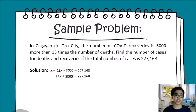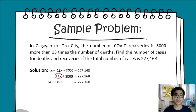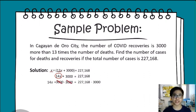Our goal now is to isolate the term 14x. To do this, let's apply the addition property of equality by adding the additive inverse of positive 3,000, which is negative 3,000, to both sides. We have now isolated the term 14x. 3,000 less than 227,168 is 224,168.